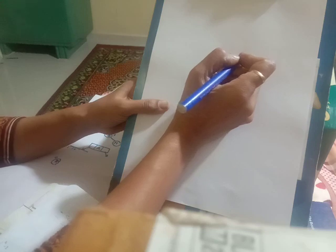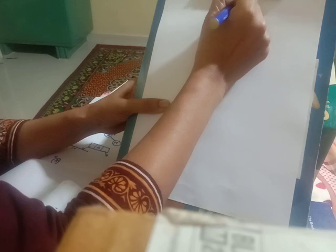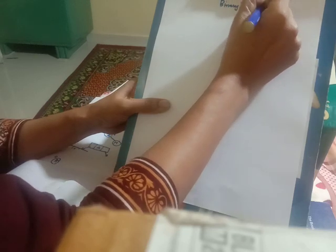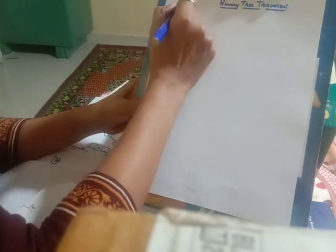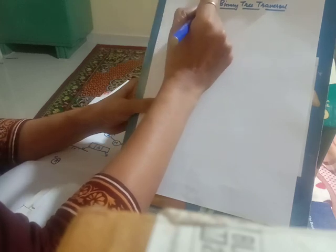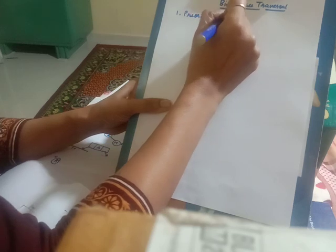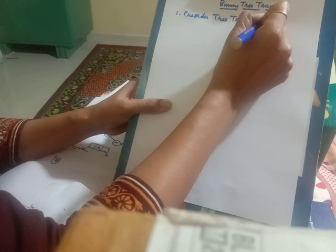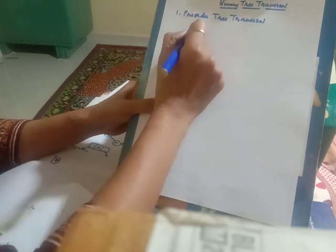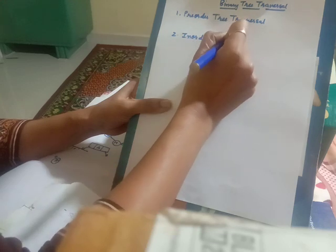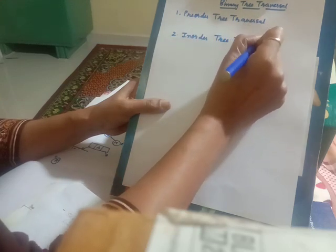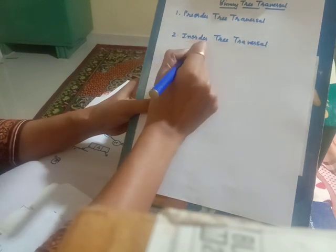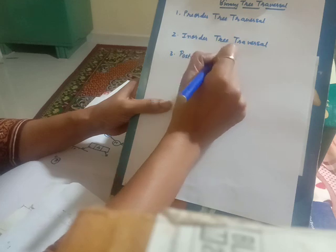Today we will try to understand the various ways in which a binary tree can be traversed. There are three methods: pre-order tree traversal, in-order tree traversal, and post-order tree traversal.